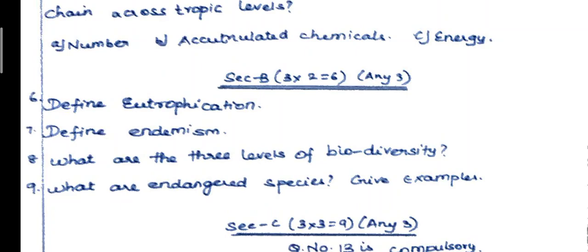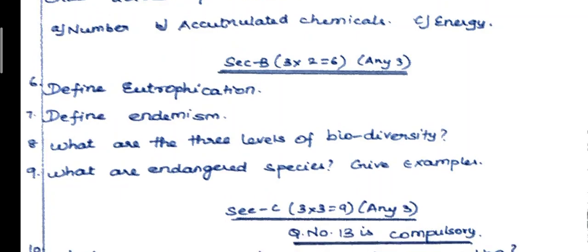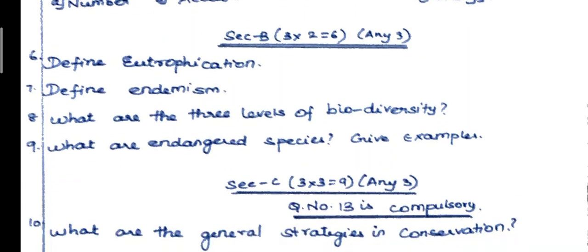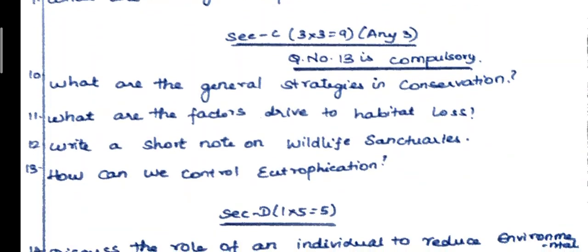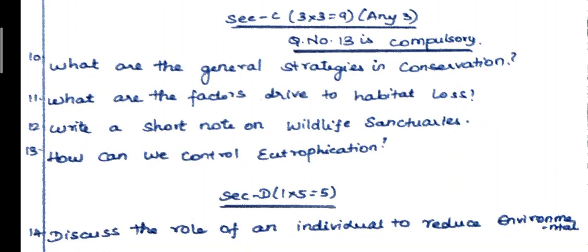9th question: what are endangered species? Give examples. Section C, 3 marks. What are the general strategies in conservation? What are the factors driving habitat loss? Write a note on wildlife sanctuaries. How can we control eutrophication?